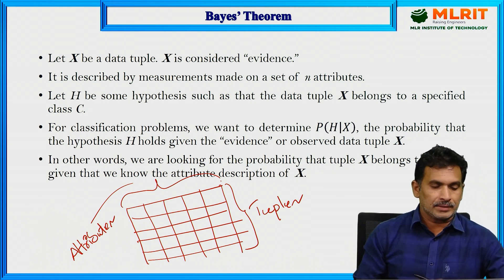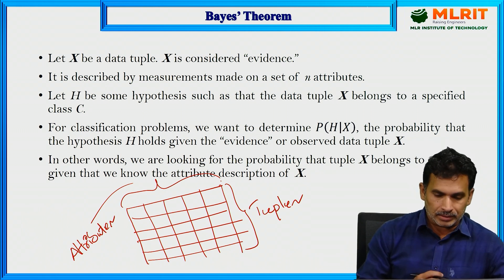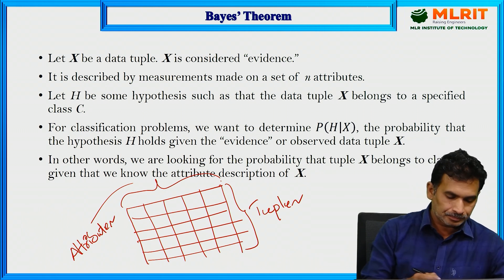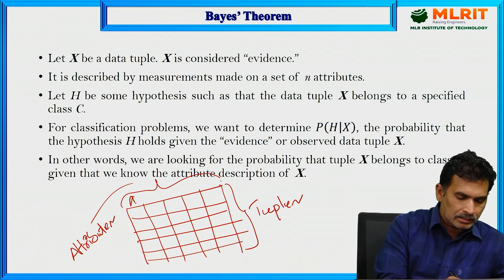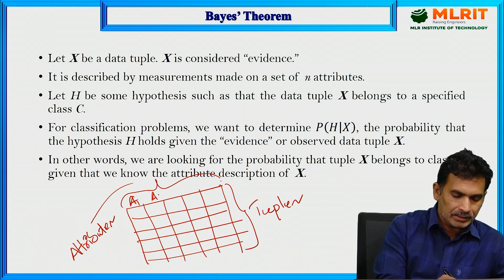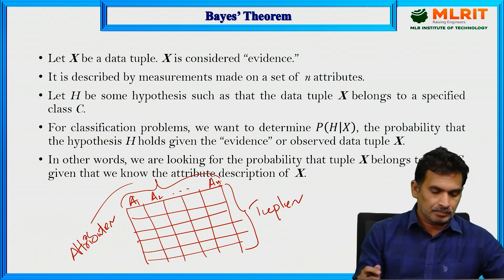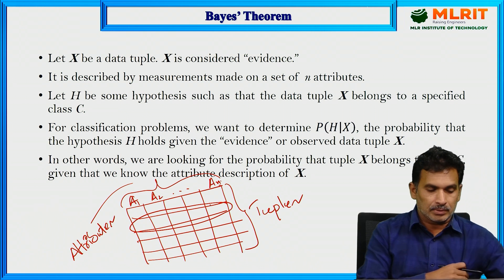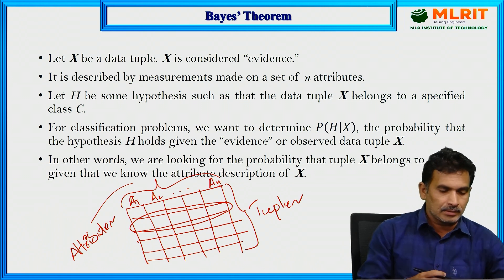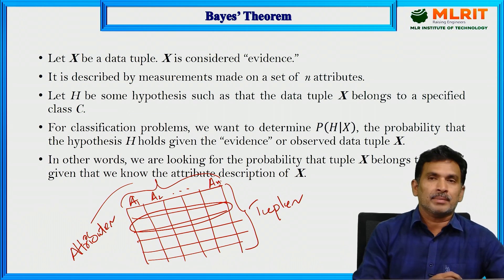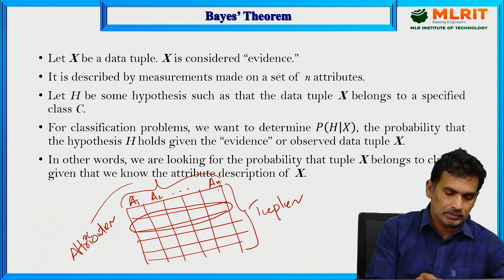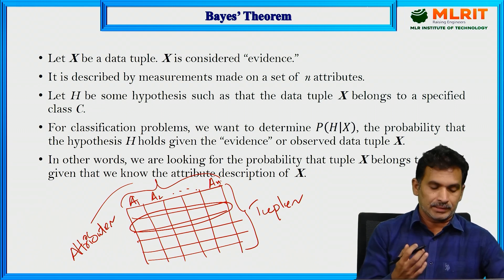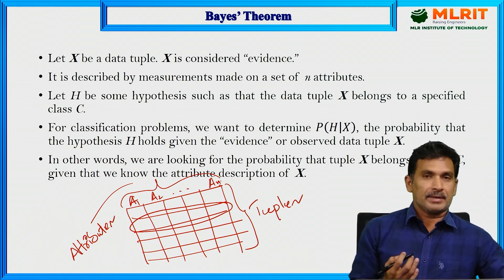The tuple X is described by measurements made on a set of N attributes — for example, attributes A1, A2, and so on up to A_N. So each data tuple is described by measurements across N attributes.